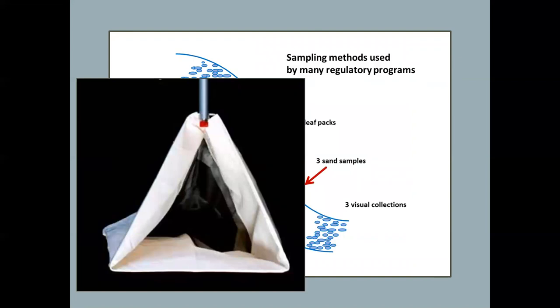Sand samples are for a particular part of the habitat. It is a depositional area in high flow. So it's usually close to the middle of the stream and these little pockets of sand and very fine gravel. The triangle net is put downstream. The sandy area is disturbed and whatever is dislodged flows into the net, is preserved in ethanol and taken to the lab.